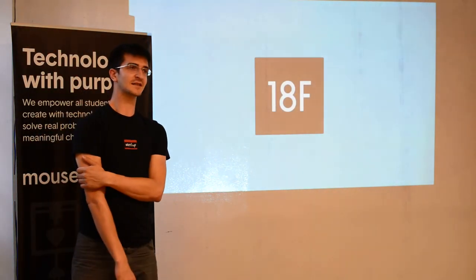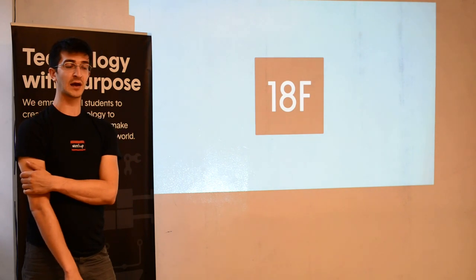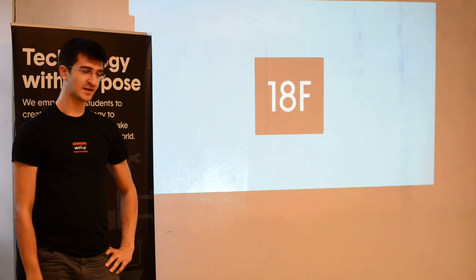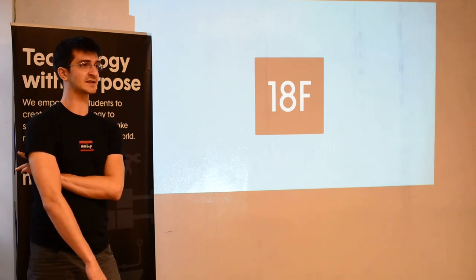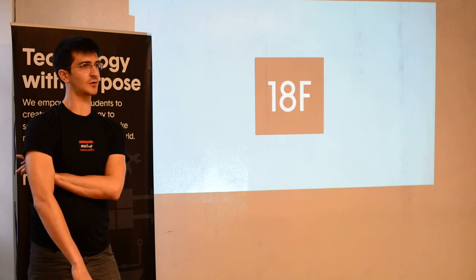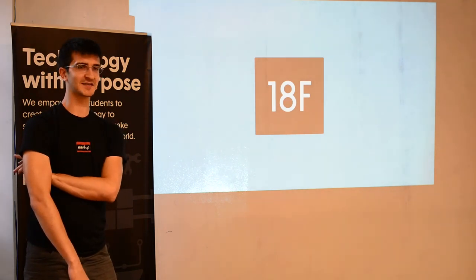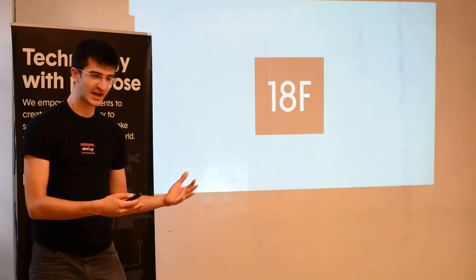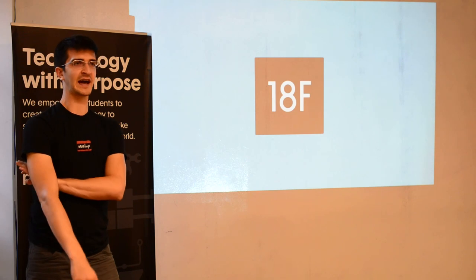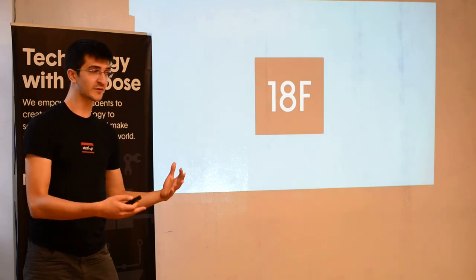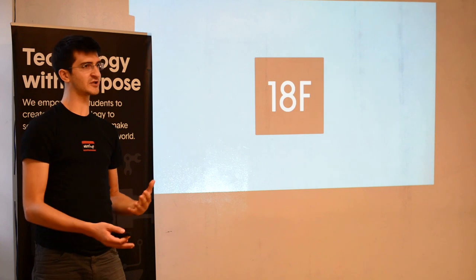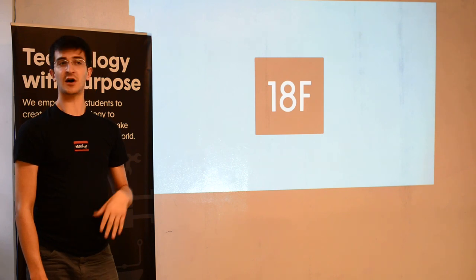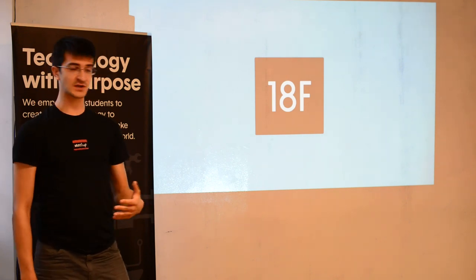My name is Aiden Feldman and I work for an organization called 18F. 18F is a team within the federal government. We are essentially trying to modernize technology in federal agencies. We work like an internal consultant where we partner with different groups like the Department of Education or the Federal Election Commission, and try to build better experiences for them. We also do trainings on agile, offer shared infrastructure, and do some work on policy and acquisition.